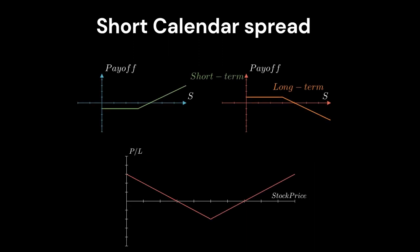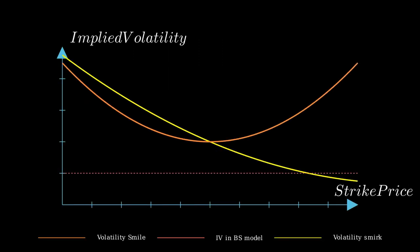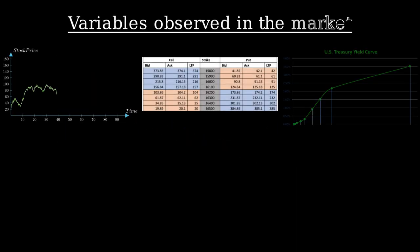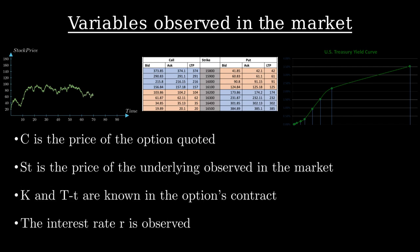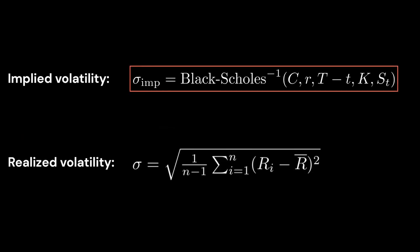In the previous video on implied volatility, I explained that implied volatility can be interpreted as the volatility expected by the market for the underlying asset. As a reminder, implied volatility is obtained by using the observed market price of the option. Then, using a pricing model such as the Black-Scholes model, we deduce the implied volatility of the model for the underlying asset. This implied volatility corresponds to the volatility that would have had to be used in the model to observe the current market prices. It is therefore different from historical or realized volatility.